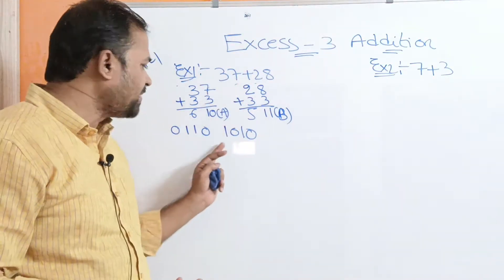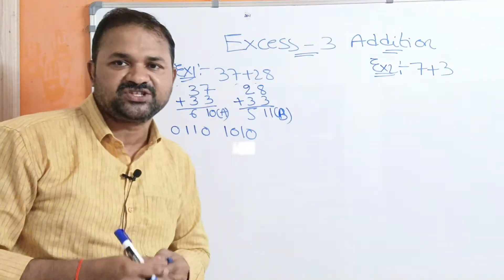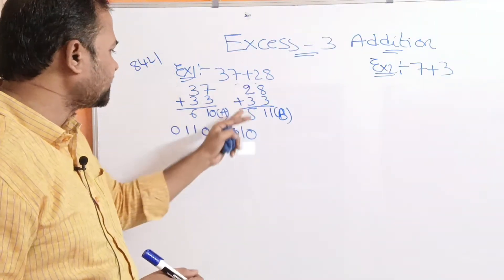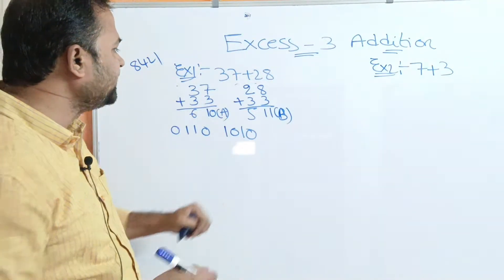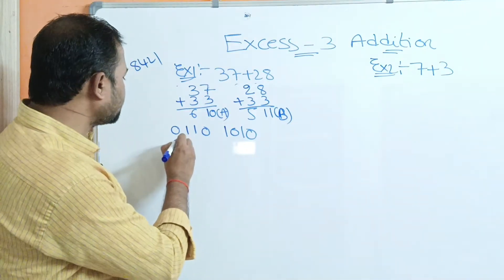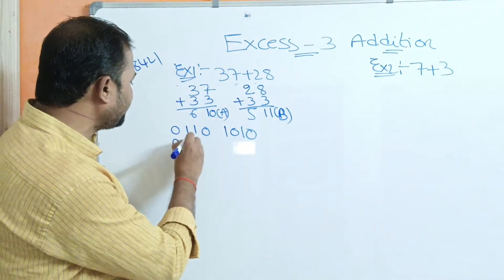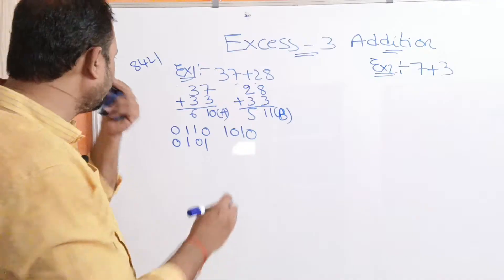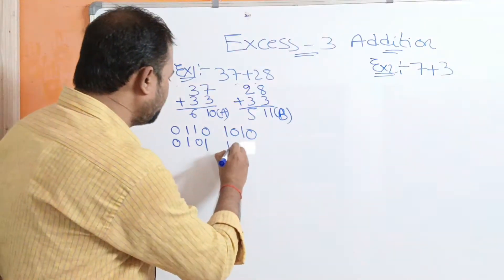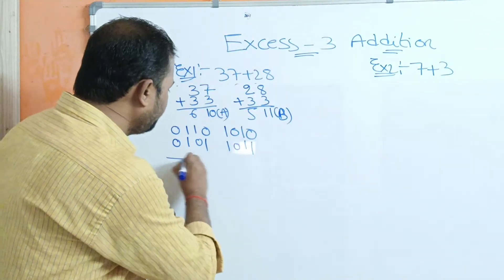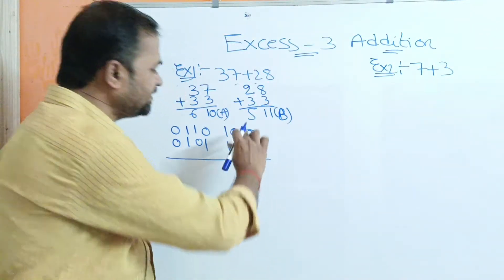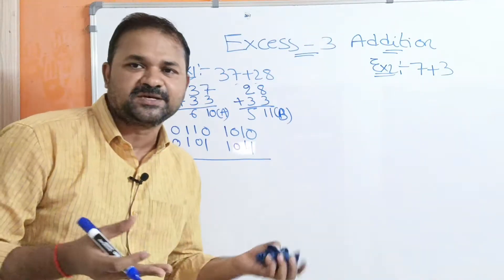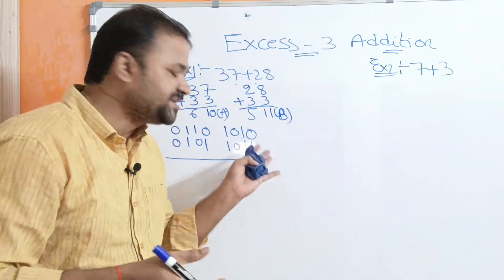Now for the second number 28: its XS3 digits are 5 and 11. 5 in binary notation is 0101, and 11 in binary notation is 1011. So 28 in XS3 binary is 0101 1011.